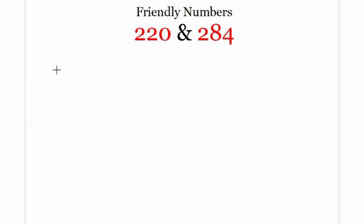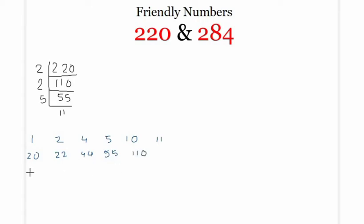We now check for the prime factorization of these two numbers. If we start with 220, then this number is divisible by 2, so 110. 110 is again divisible by 2, giving 55. 55 is divisible by 5, so 11. Therefore the divisors of 220 are: 1, 2, 4, 5, 10, 11, 20, 22, 44, 55, 110, and 220.